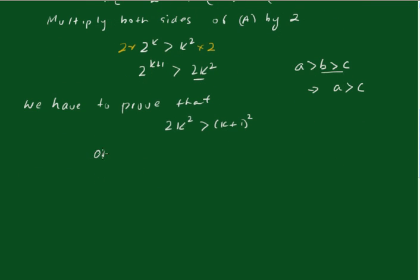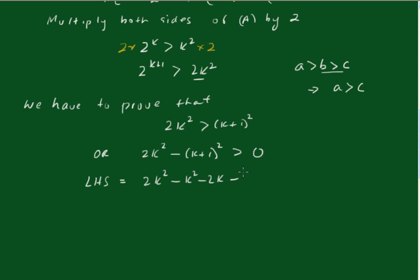So I'll look at the left hand side and say it equals 2k squared minus k plus 1 all squared, which equals 2k squared minus k squared minus 2k minus 1, which equals k squared minus 2k minus 1. Now I'll complete the square here. There's k squared minus 2k, and this will have to be plus 1 minus 2, which is k minus 1, all squared minus 2.